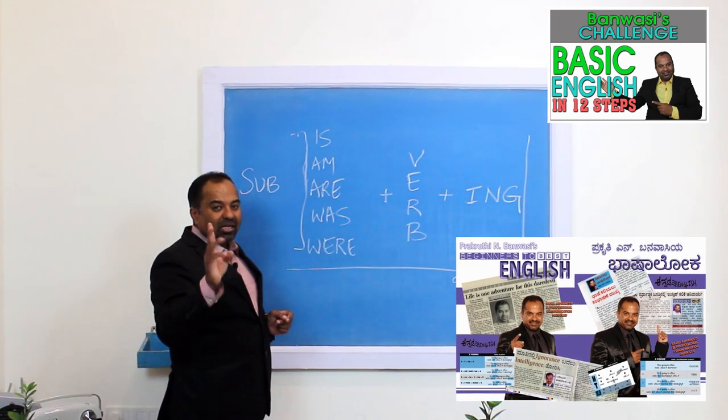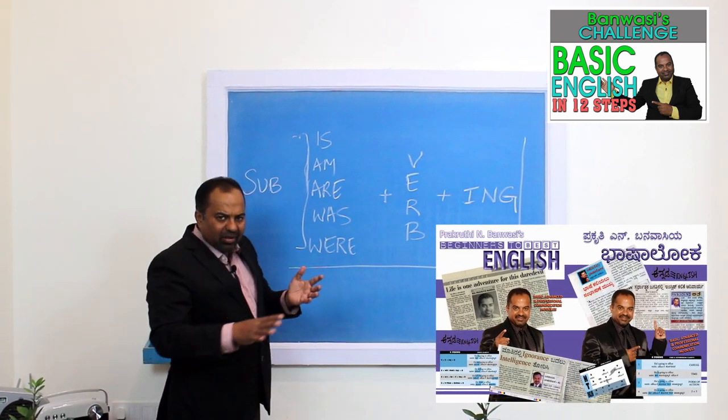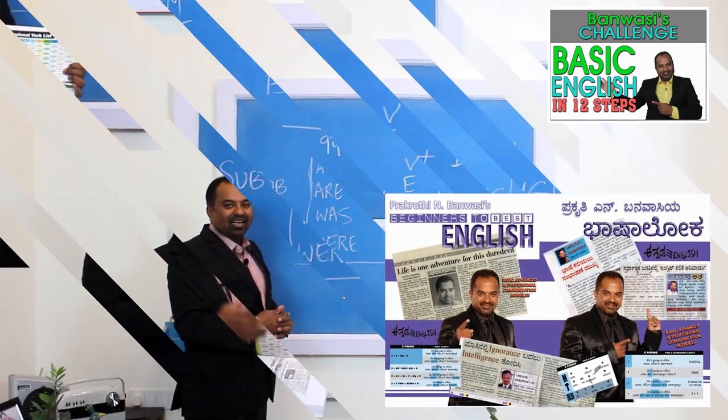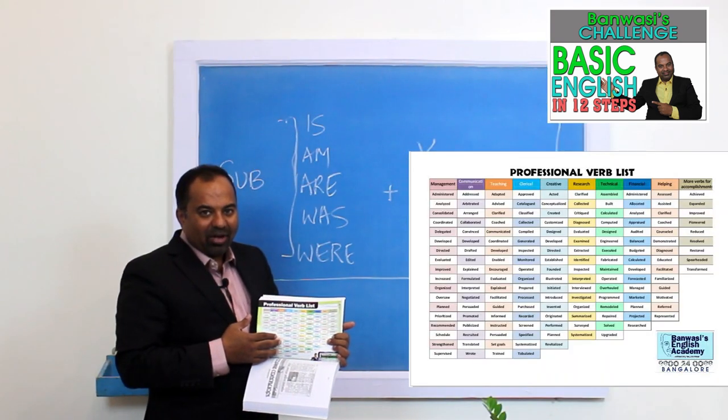Look at page numbers 91, 92, 93, 94. Use AM with all the verbs listed there to make perfect sentences. You can even become a professional verbalist.